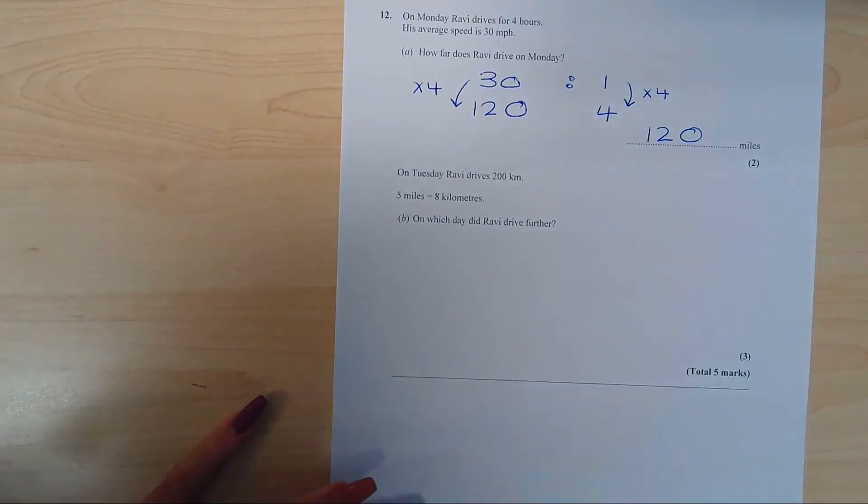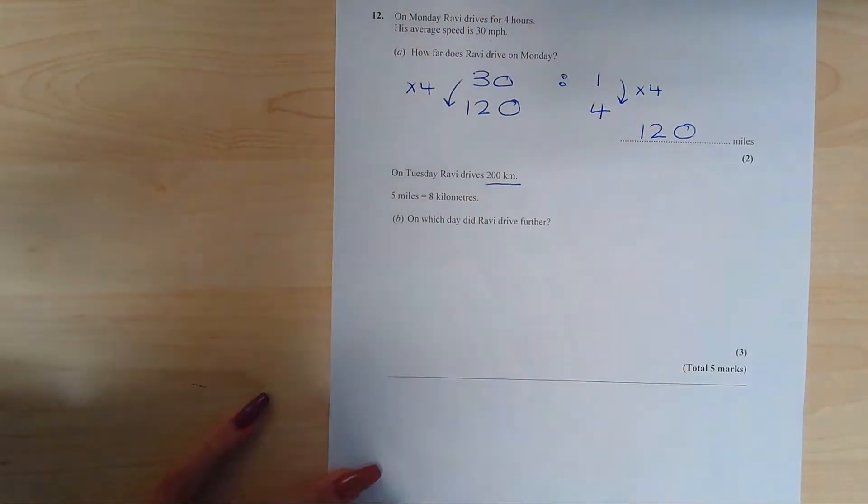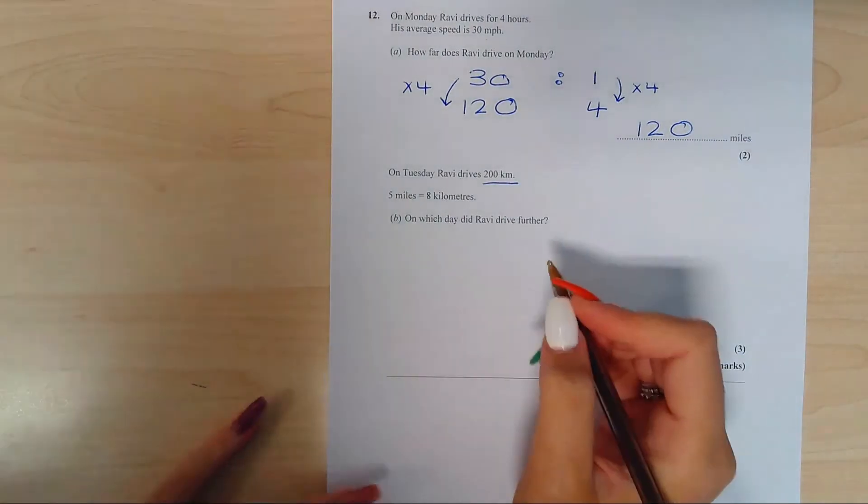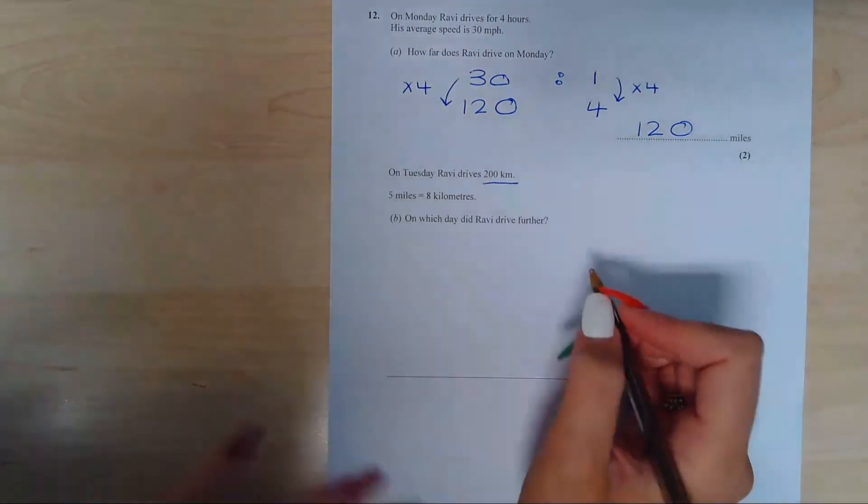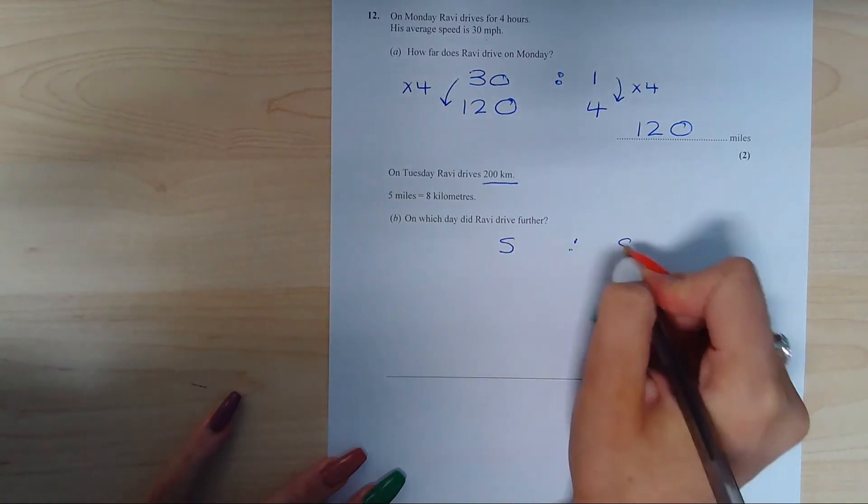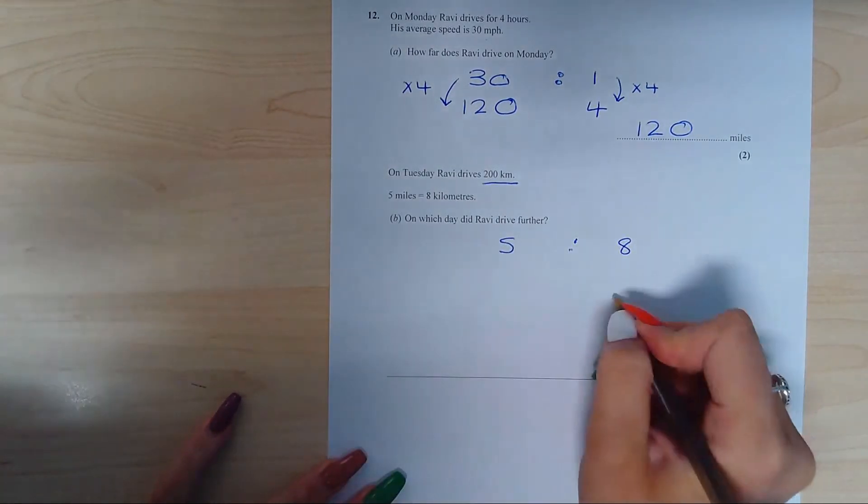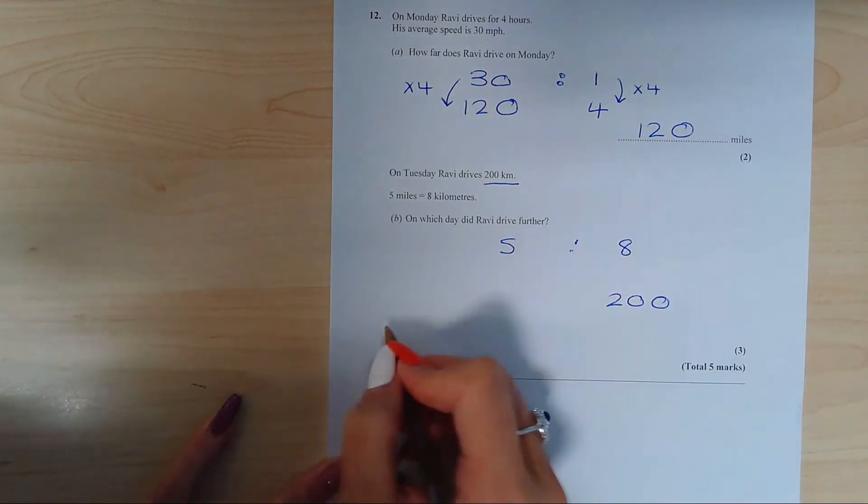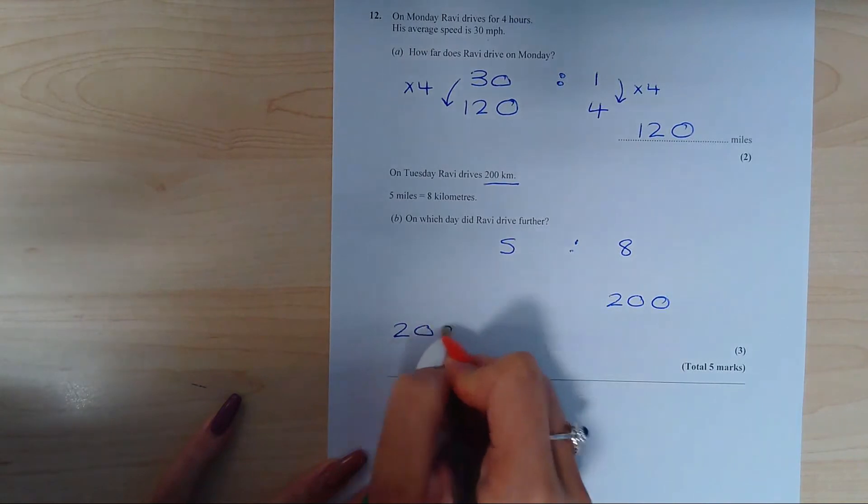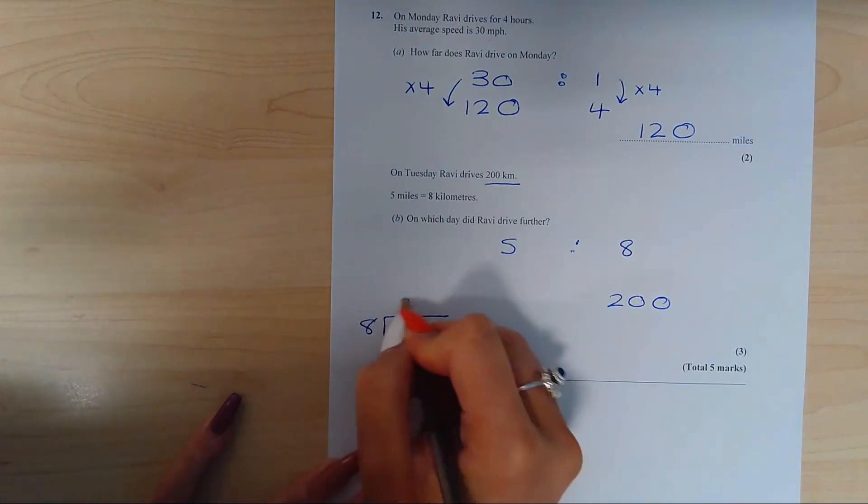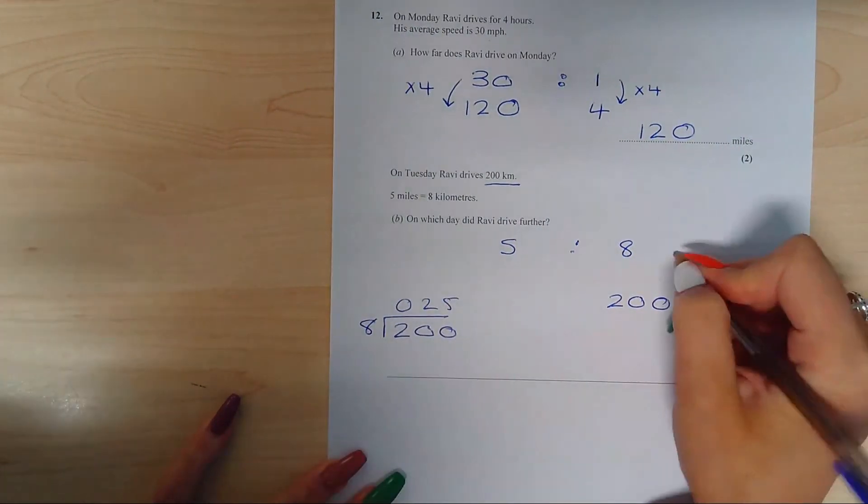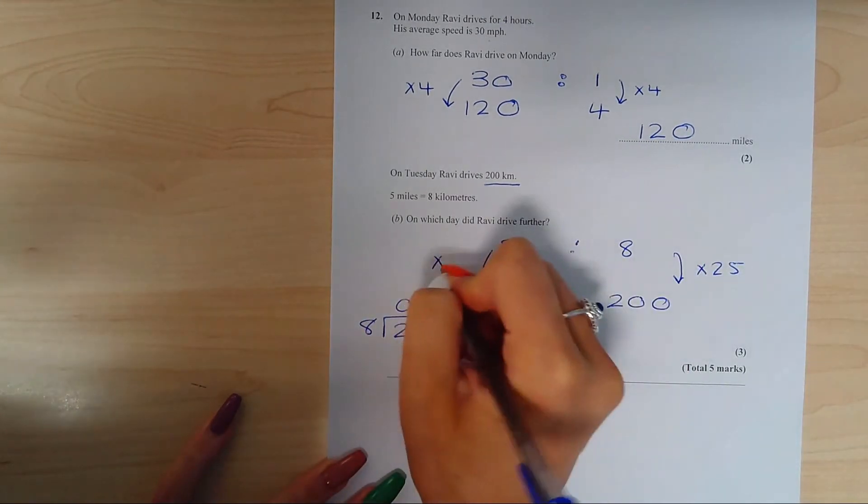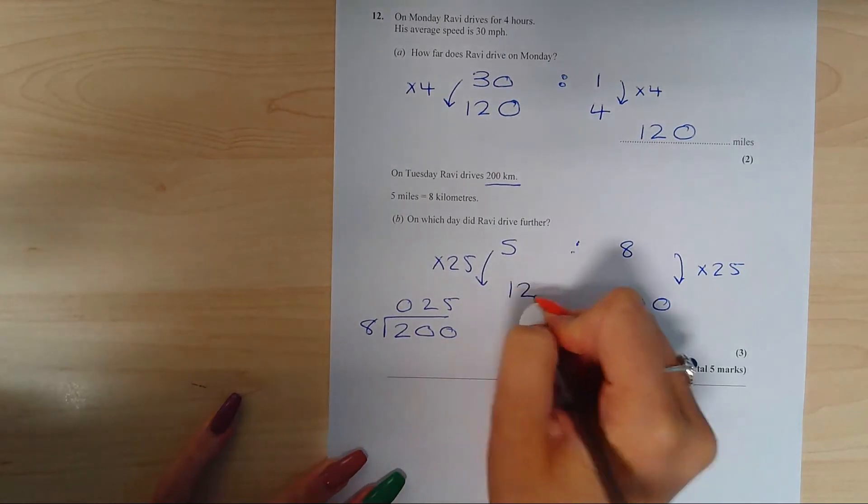On Tuesday, Ravi drives 200 kilometers. You would have to change kilometers into miles for this to work. So setting it up as a ratio again of five miles to eight kilometers. And you are given 200 kilometers. In order to get from eight to 200, you do it in reverse. So 200 divided by eight is going to give you 25. Therefore, your multiplier is 25. Doing the same to the other side, five multiplied by 25 is going to give you 125 miles.